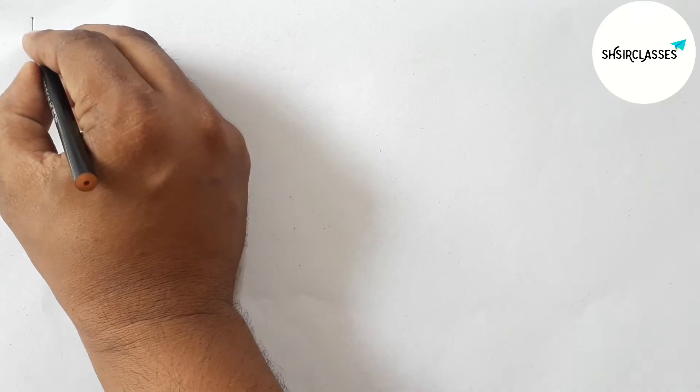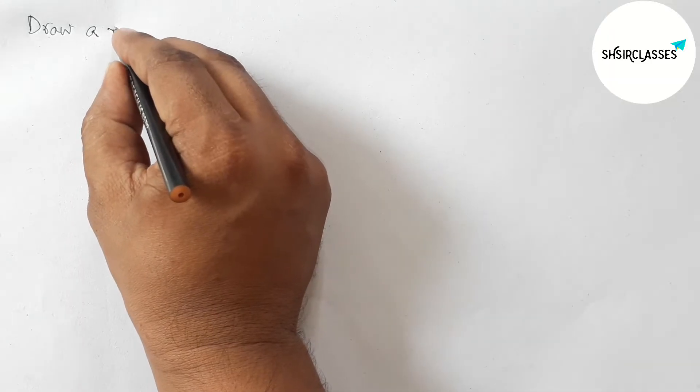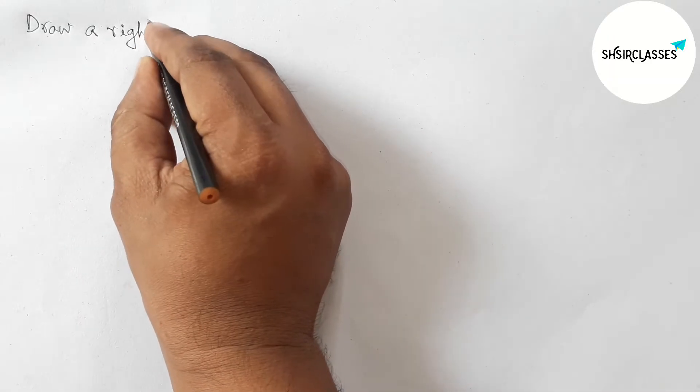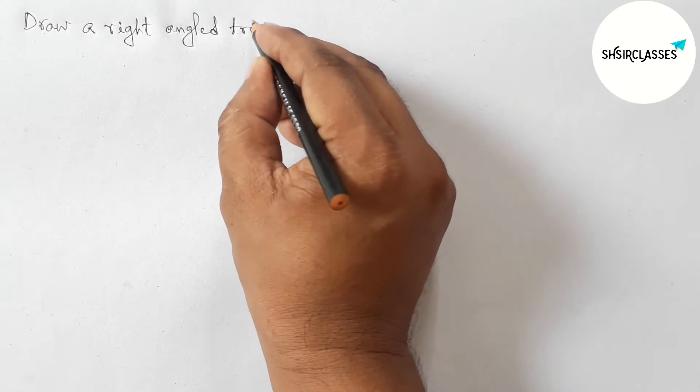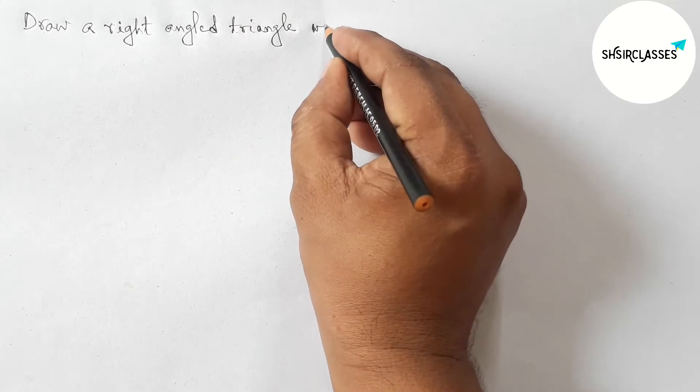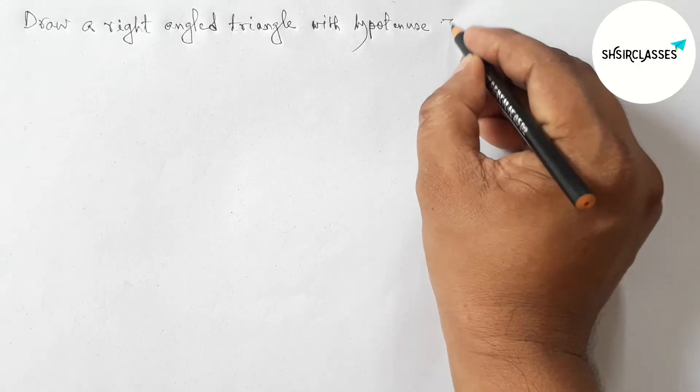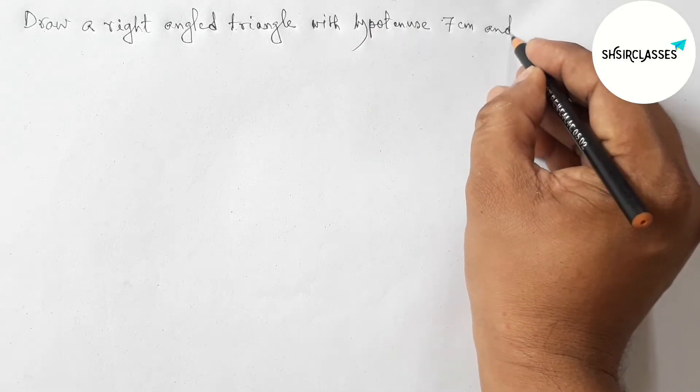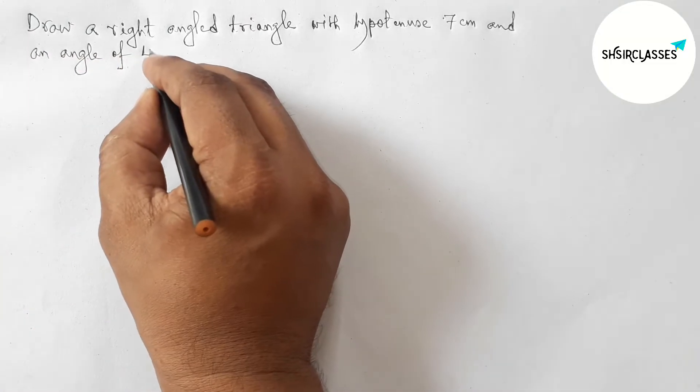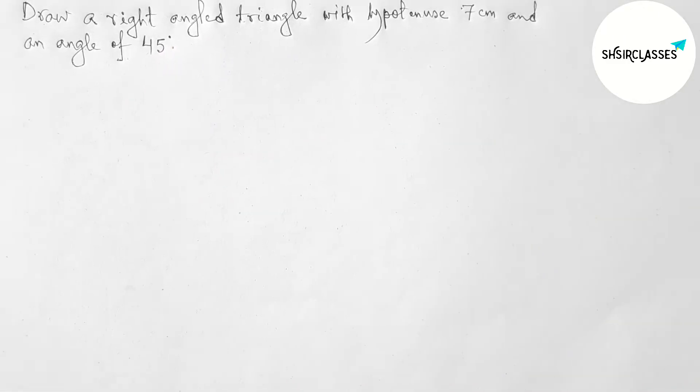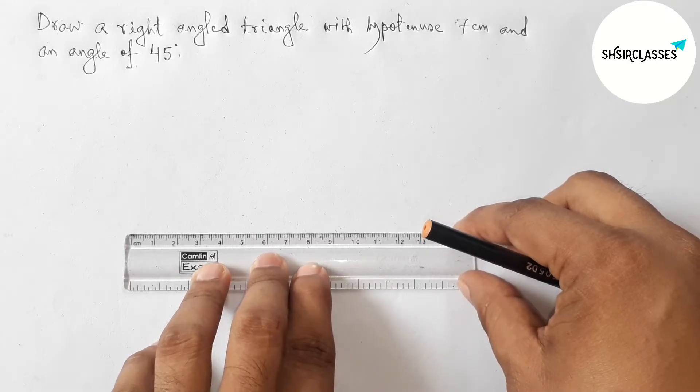Hi everyone, welcome to Essay Share Classes. Today in this video, draw a right angled triangle with given hypotenuse equal to 7 centimeters and one angle of the right angle triangle is 45 degrees in an easy way. So please watch the video till the end.